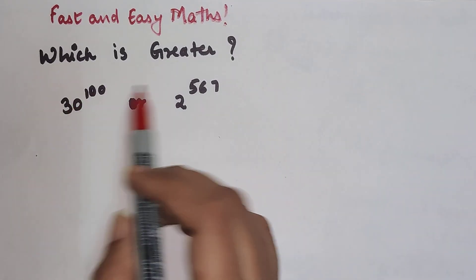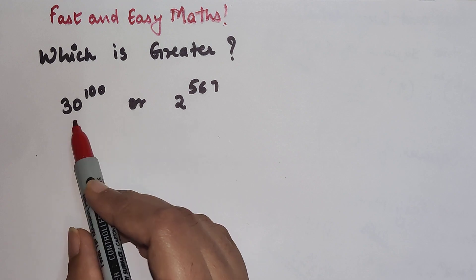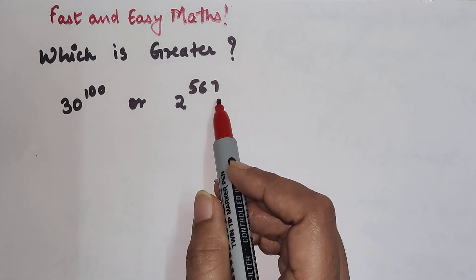So students, here we have to find which is greater, and the values given over here are 30 raised to 100 and 2 raised to 567.